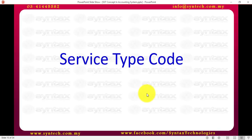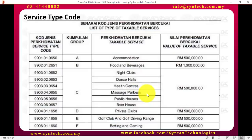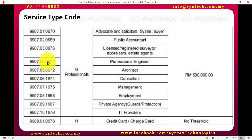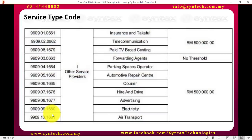For example, if you are under accommodations, you just need to get that code as your item. For example, for Syntex Technologies, we are providing IT services and Syntex is an SST registrant. So my service type code will be 9907.10.1676. This will be Syntex's service type code for our maintenance. This is for other service providers as well.